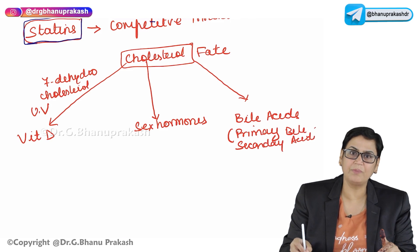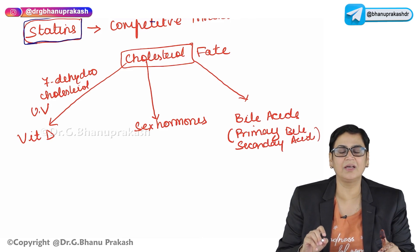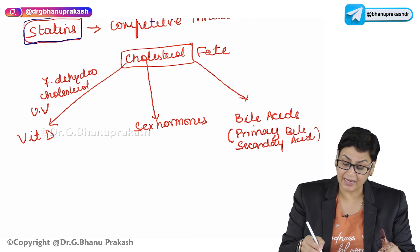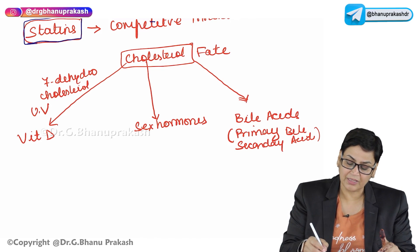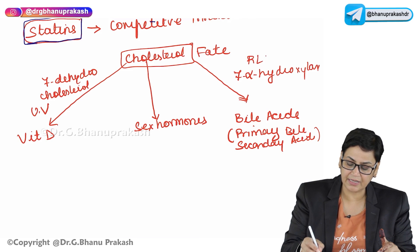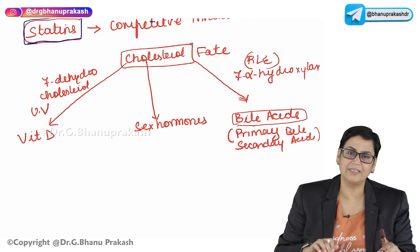What you have to remember here is the rate-limiting enzyme for bile acid synthesis, because the synthesis of bile acids is very complicated. The rate-limiting enzyme is 7-alpha hydroxylase, which is the rate-limiting enzyme for the synthesis of these bile acids.